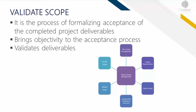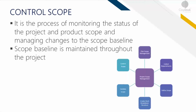You have to validate the scope, which is the process of formalizing acceptance of the completed project deliverables. The key benefit of this process is that it brings objectivity to the acceptance process — if you have a detailed WBS and a well-scoped plan, it's easier for all stakeholders to accept, whether that's the client side or internal senior management. Control scope is the process of monitoring the status of the project — you don't just create the scope, you also need to control and monitor it to make sure everything stays within the set boundaries. The key benefit is that the scope baseline is maintained throughout the project.